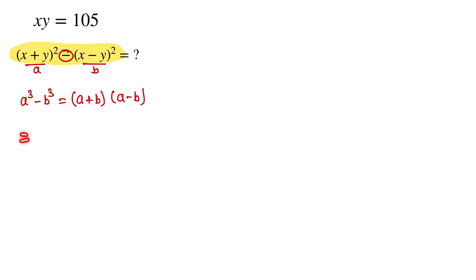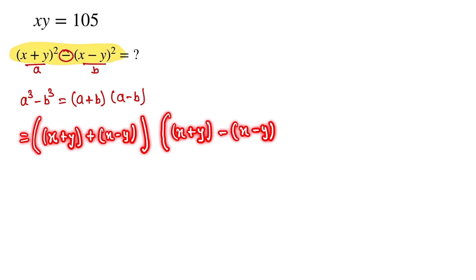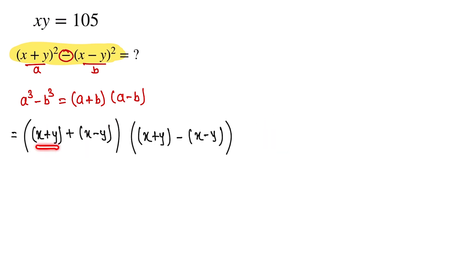Here a is equal to (x+y), so we have (x+y) plus, and this one b is equal to (x-y), into here is (x+y) minus (x-y). Now we break the bracket.